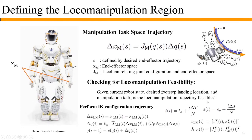We perform this by discretizing along the contact transition time delta t, stacking the locomotion and manipulation tasks in Jacobians, and performing an IK configuration trajectory. If for all i this trajectory converges, then the loco-manipulation trajectory is feasible. This enables us to construct, visualize, and learn loco-manipulation regions.